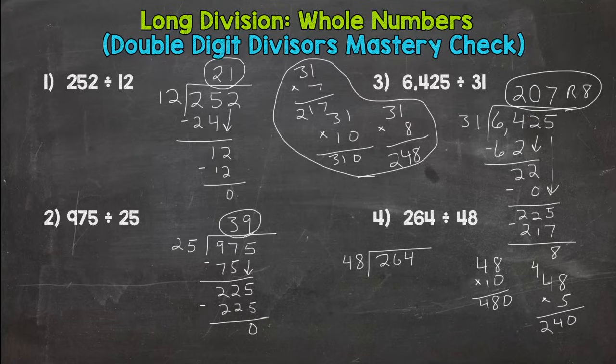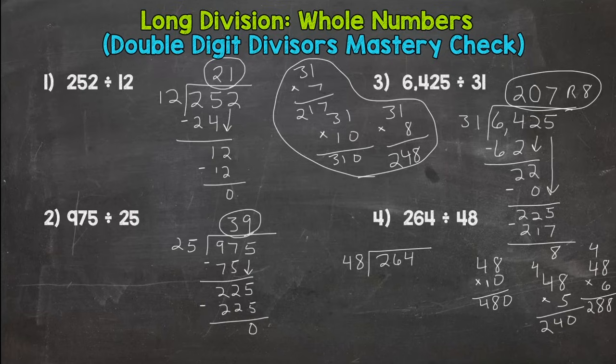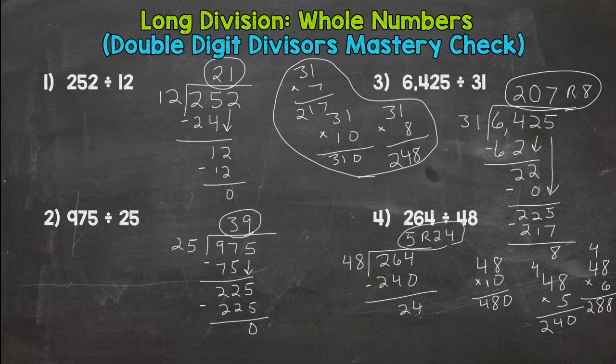So it's going to be a five. And make sure the five is above the 264, not above the 2, not above the 26. Five times 48 is 240. Subtract, you get remainder 24. So your quotient would be five, remainder 24.